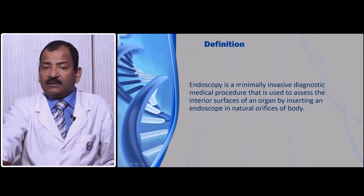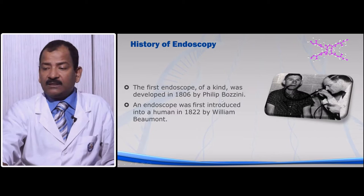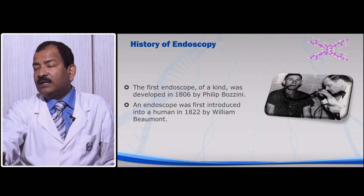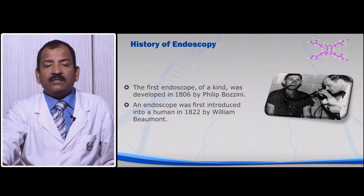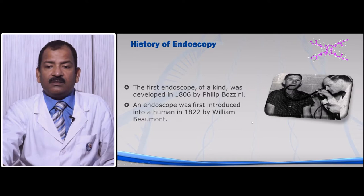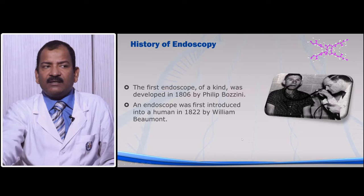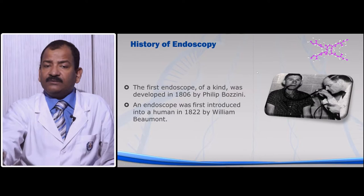The history is very interesting. Endoscopy was first invented in 1806 by Philip Borghini. At that time there was only a fiber optic endoscope, and it was used just to see the esophagus. It was first used in humans in 1822 by William Beaumont — this is the original photograph where he is seeing the upper cervical esophagus. At that time it was a very crude technique.